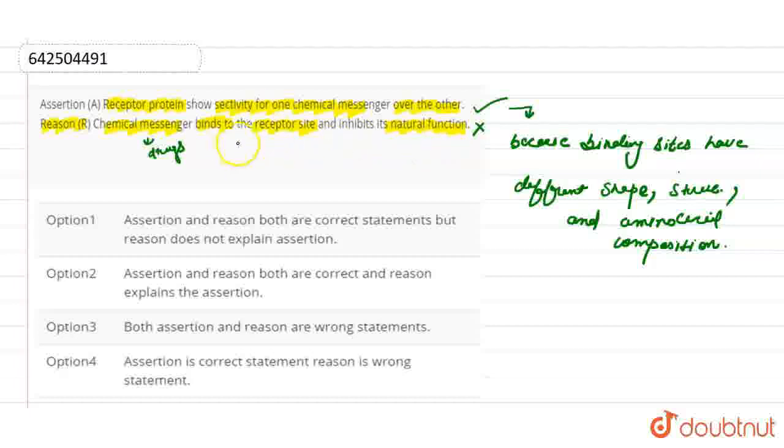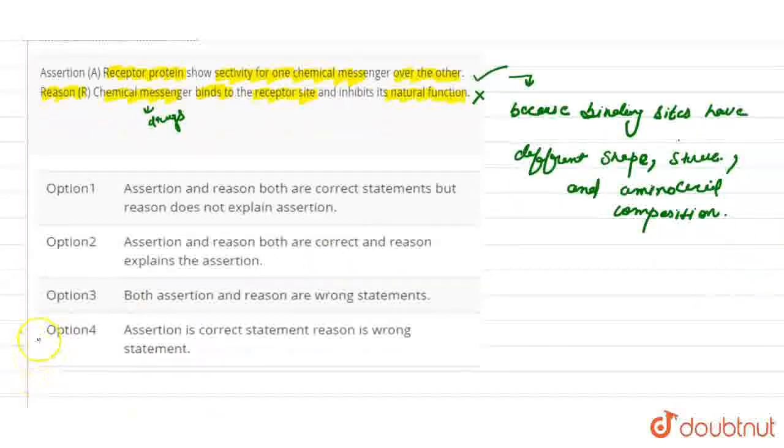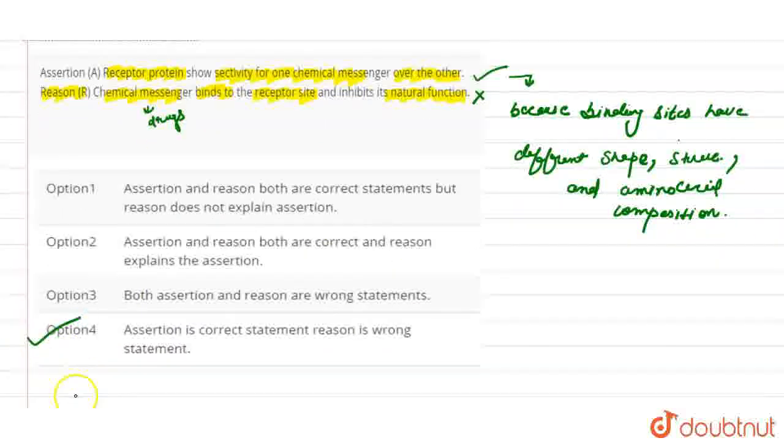Okay, so here assertion is correct and reason is wrong. So option 4 here is the correct answer for this question here. Thank you.